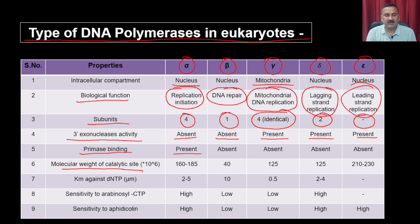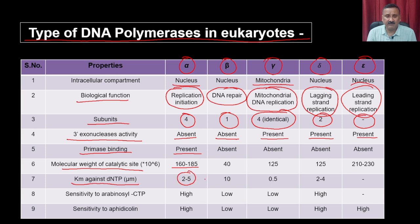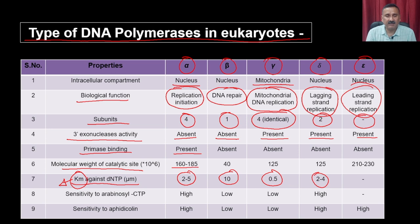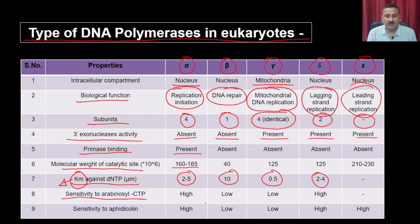The 3-prime exonuclease activity is absent in alpha and beta, but present in gamma, delta, and epsilon. The molecular weight of the catalytic site ranges from 160 to 185 kDa. The KM for dNTPs — the Michaelis-Menten constant, which indirectly indicates the affinity of the enzyme for dNTPs — is in the range of 2 to 5 micromolar for alpha, 10 for beta, 0.5 for gamma, and 2 to 4 for delta. Sensitivity to arabinonucleotide CTP is high for alpha and delta, but low for beta and gamma.